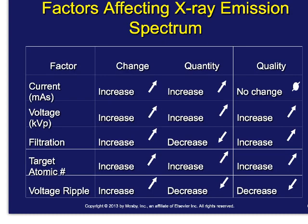When we increase kVp, it increases both the quantity and quality of X-rays being produced, largely because it increases the energy of Bremsstrahlung interactions. Think of kVp as more like the gauge of the shotgun — the power behind it. With filtration, when we add filtration to the X-ray beam, we see an increase in quality but a related decrease in quantity. We're essentially removing the weaker X-rays, so all that remains is the higher-energy X-rays.